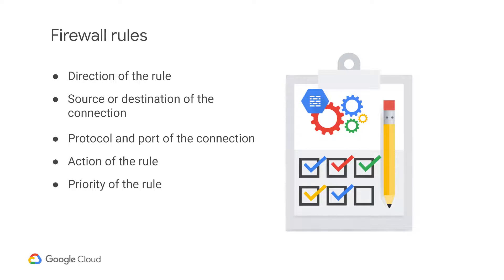The priority of the rule governs the order in which the rules are evaluated. The first matching rule is applied. And lastly, the rule assignment. By default, all rules are assigned to all instances, but you can assign certain rules to certain instances only.